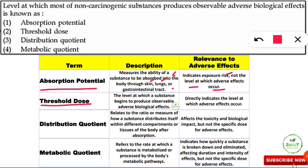Next is threshold dose, which we already discussed. It is the level at which a substance begins to produce observable adverse biological effects. We can observe some defect after taking that substance at a particular dose — that is the threshold dose. It directly indicates the level at which adverse effects occur, which is not the case for absorption potential.